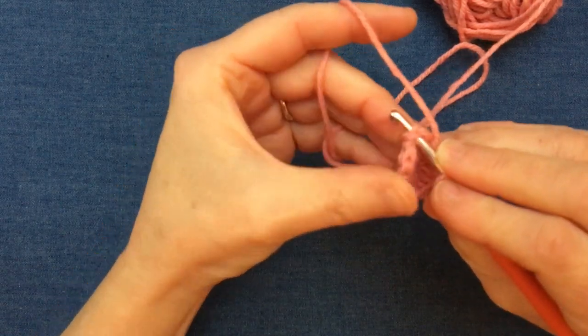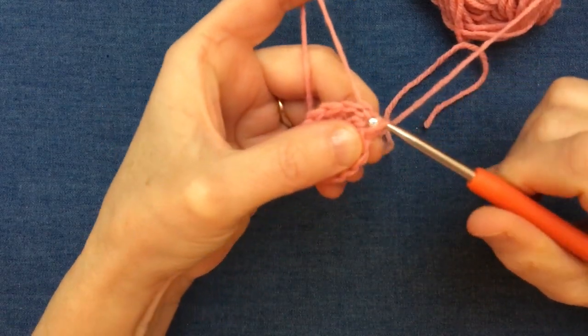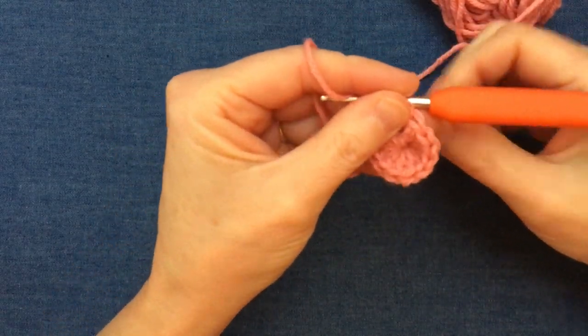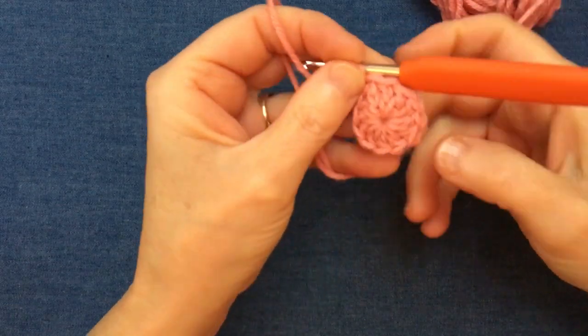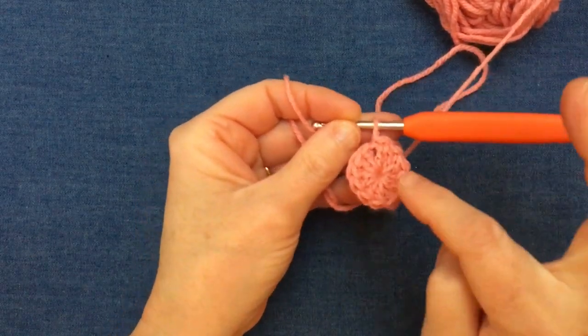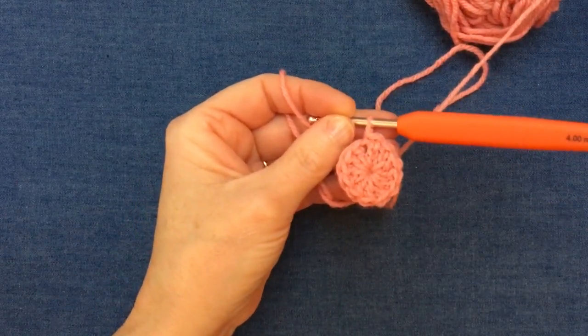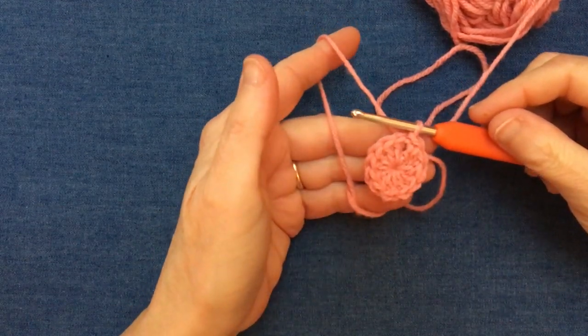And at this point I'm now going to pull in nice and firmly that tail, and you can see now how neatly that center looks for the beginning of the project using the magic ring technique.